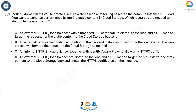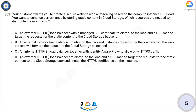to target the requests for the static content to the Cloud Storage backend. Option B: An external network load balancer pointing to the backend instances to distribute the load evenly; the web servers will forward the request to Cloud Storage as needed. Option C: An internal HTTPS load balancer together with Identity-Aware Proxy to allow only HTTPS traffic. Option D: An external HTTPS load balancer to distribute the load and a URL map to target the requests for the static content to the Cloud Storage backend, with HTTPS certificates installed on the instance. Now think for five seconds for the correct answer.